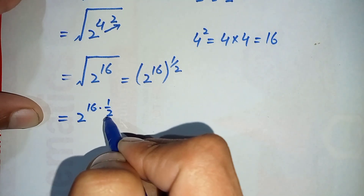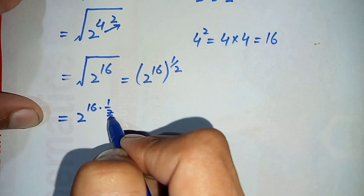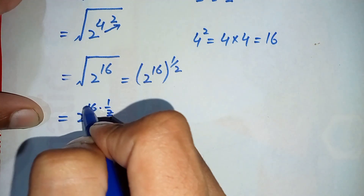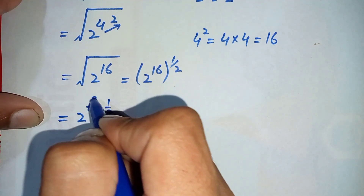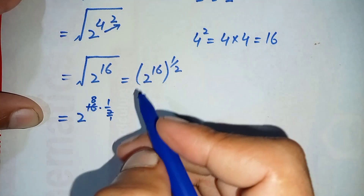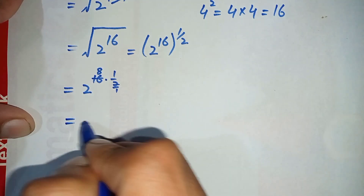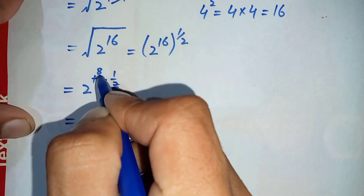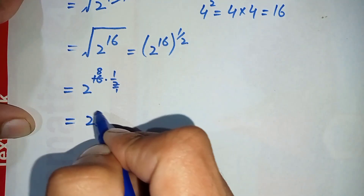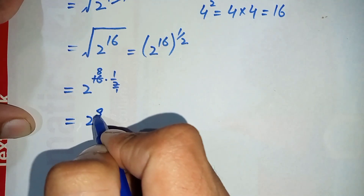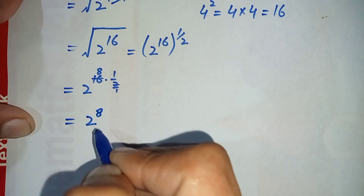Let's simplify these two numbers: 2 times 1 is 2 and 2 times 8 is 16. So it becomes equal to 2 raised to power 8, since 16 times one half equals 8.